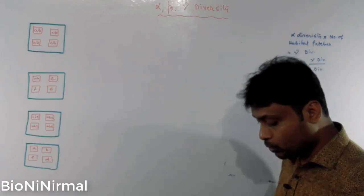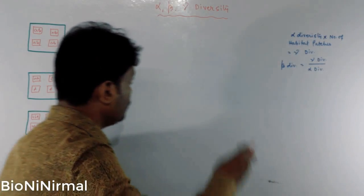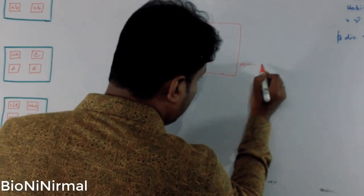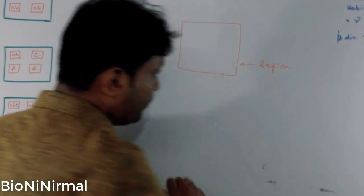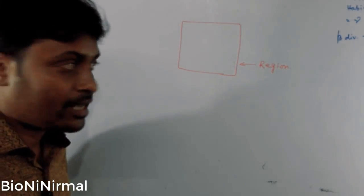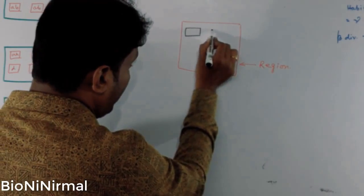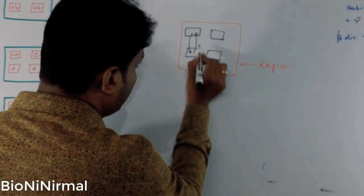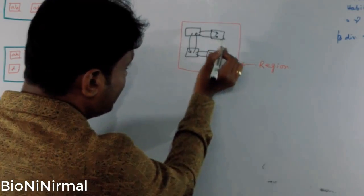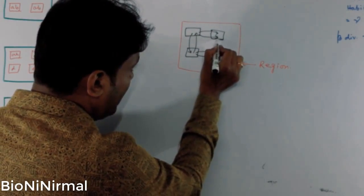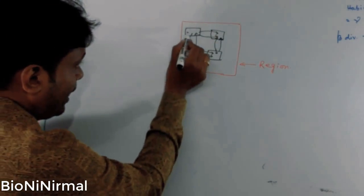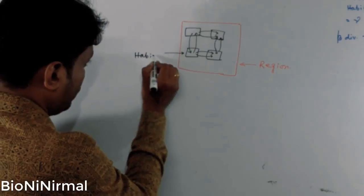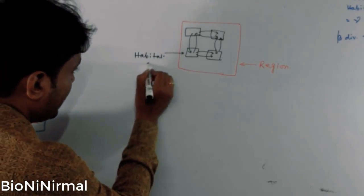To understand alpha, beta, and gamma diversity, you need to know a few important terms. First is the region. A region is a place where many habitats are found, and there is no barrier among these habitats. You can see that in this region, four habitats are present and there are no distinctions among them — this is called a region.